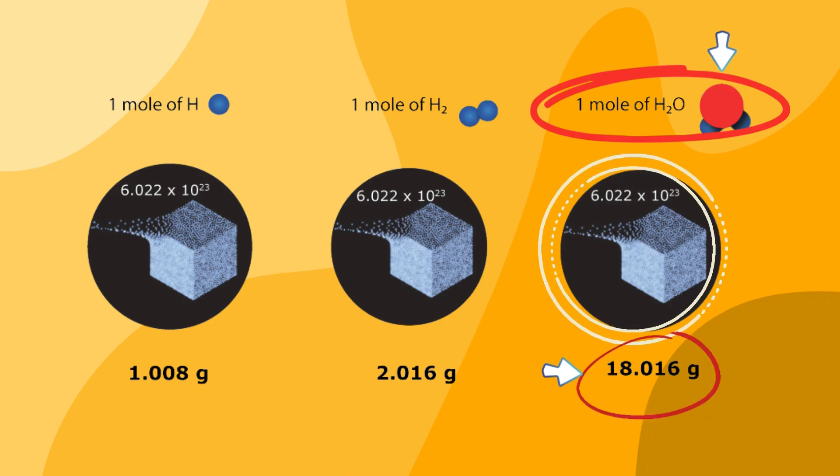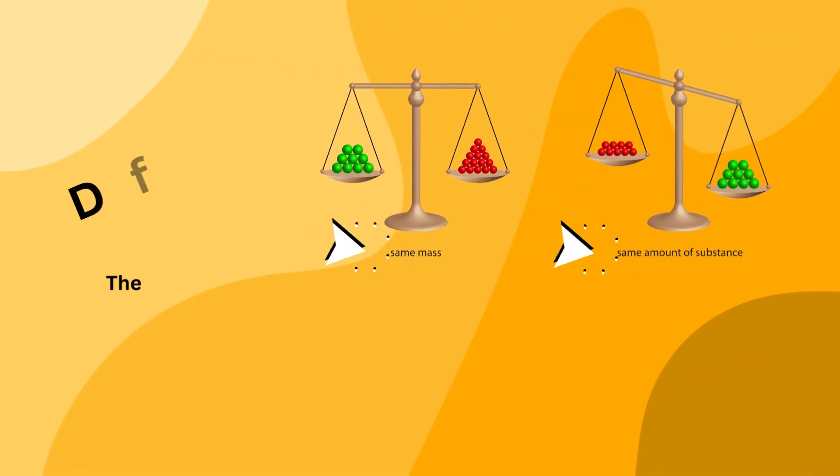One mole of water molecules contains 6.022 into 10 to the power of 23 water molecules equals 18.016 gram.